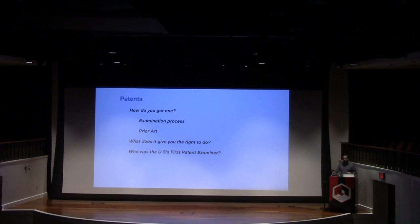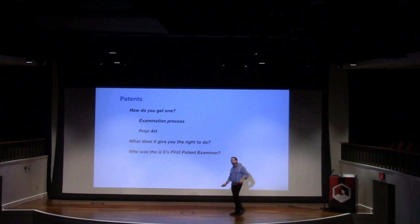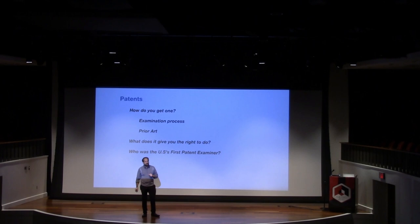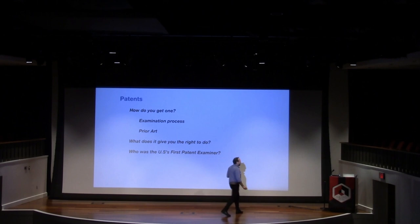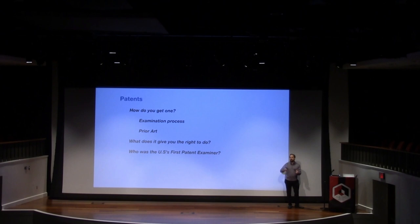Back to Socrates — what does a patent give you the right to do? Absolutely nothing. You don't get the right to do anything. You get the right to exclude others from making, using, selling, or offering for sale the invention. But you don't get to do anything yourself. It's a negative right — just like a property right. If someone infringes my patent, I get the right to exclude them. I do not get the right to do anything on my own.